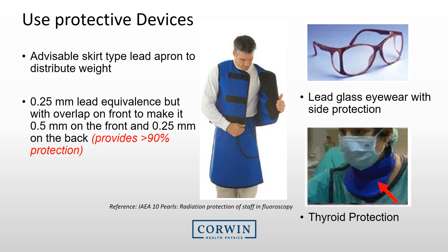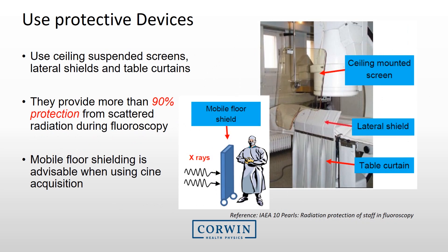Using just 0.25 mm lead provides more than 90% protection from scattered radiation. In addition to personal lead, use ceiling suspended screens, lateral shields, and table curtains — they too provide more than 90% protection from scattered radiation. When available, it is recommended that a mobile floor shield be used during cine runs or digital acquisitions.